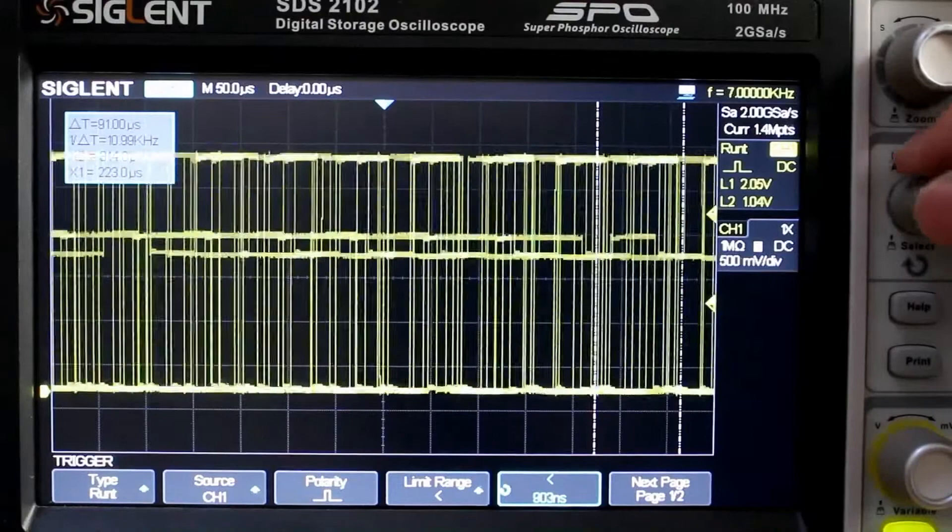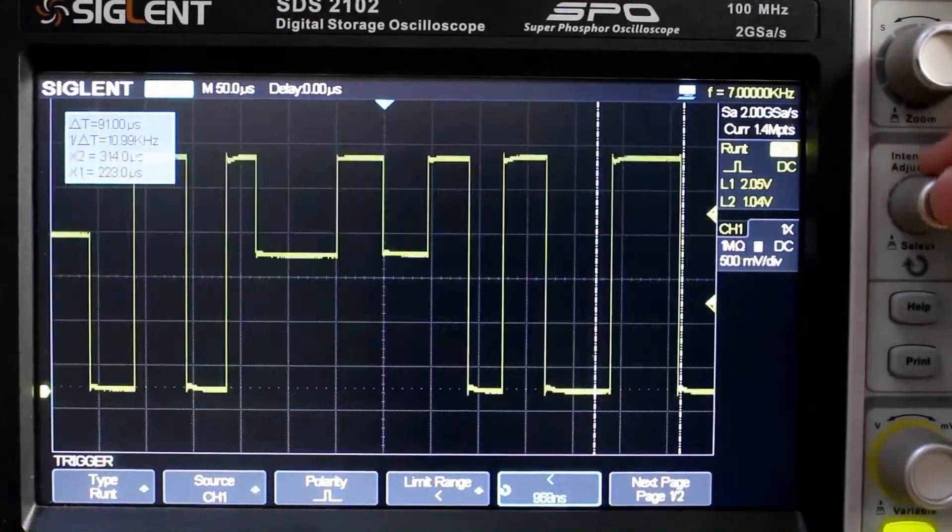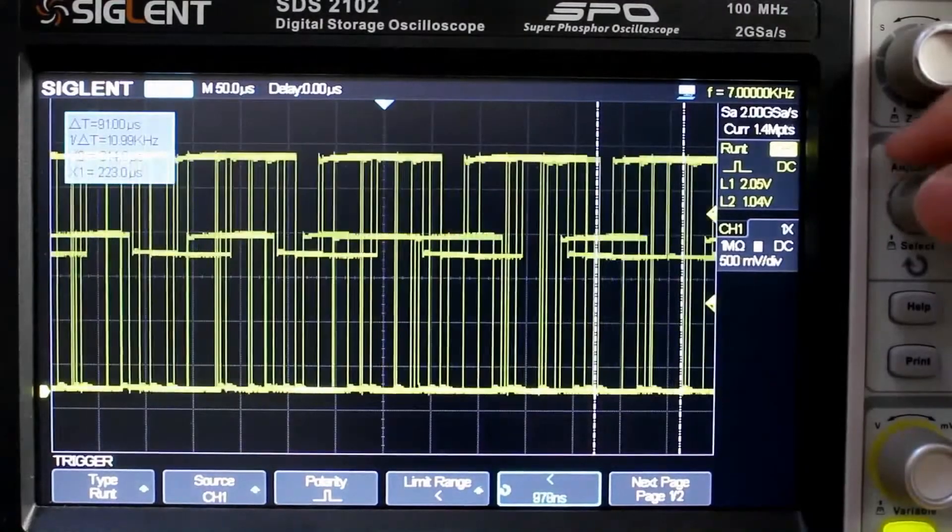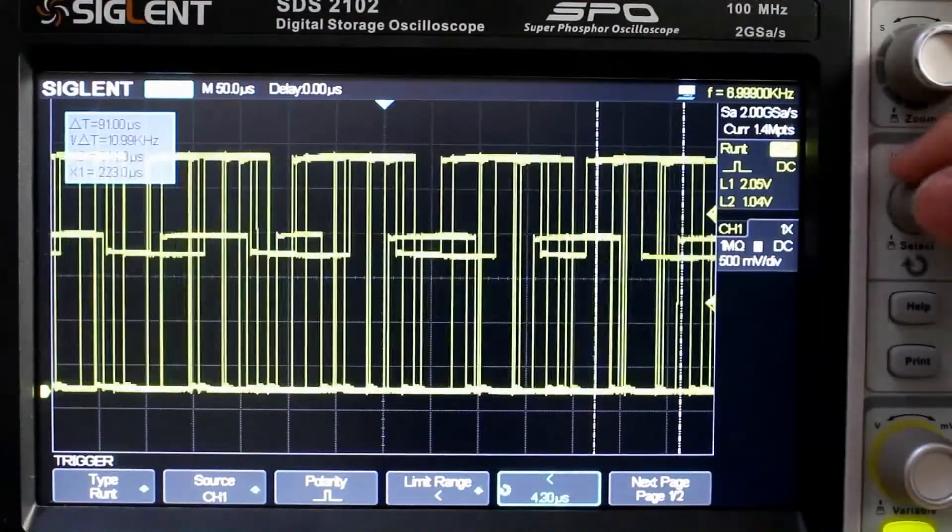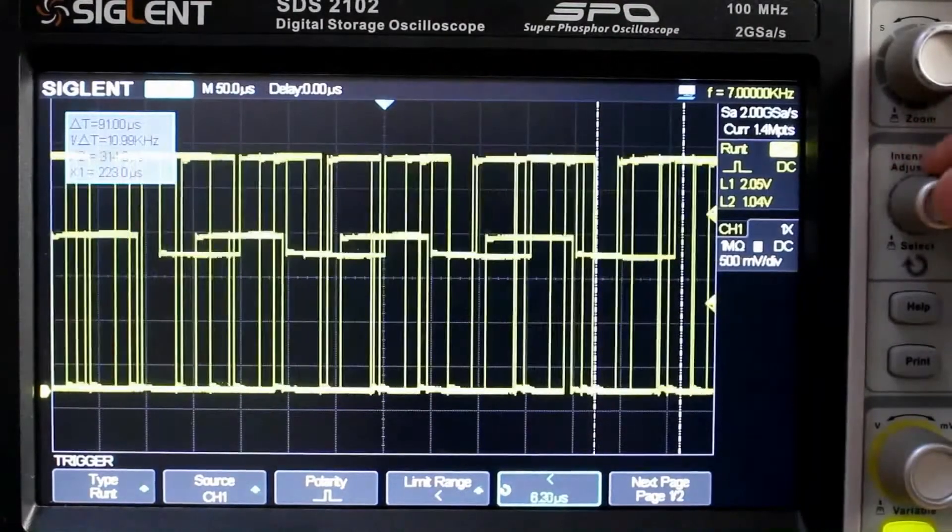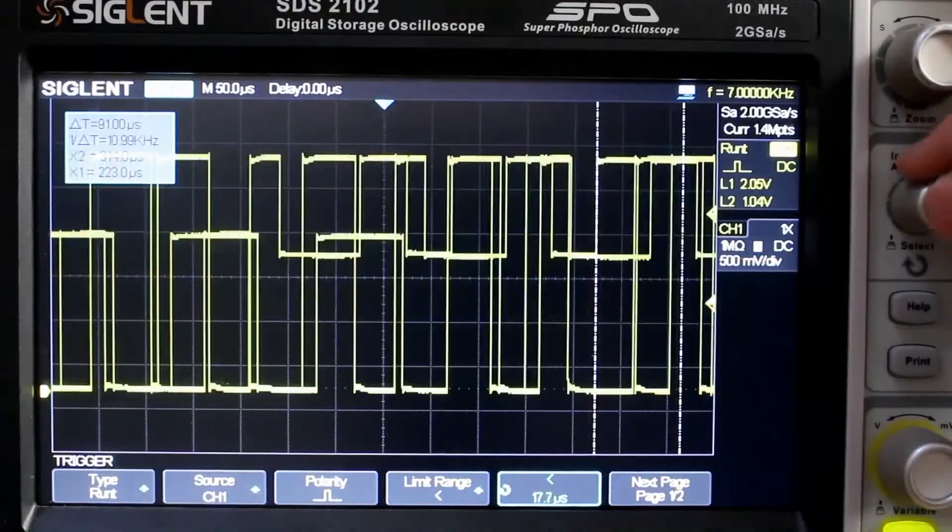So anywhere in between that 47, let's say 50 to 90, anywhere between that microseconds. And we should have triggered at the positive runt.